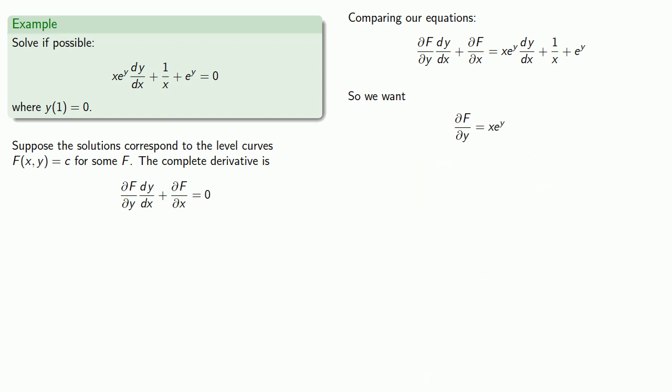We can find f by finding the antiderivative with respect to y. Because we are dealing with a partial derivative with respect to y, our constant is going to be some function of x.